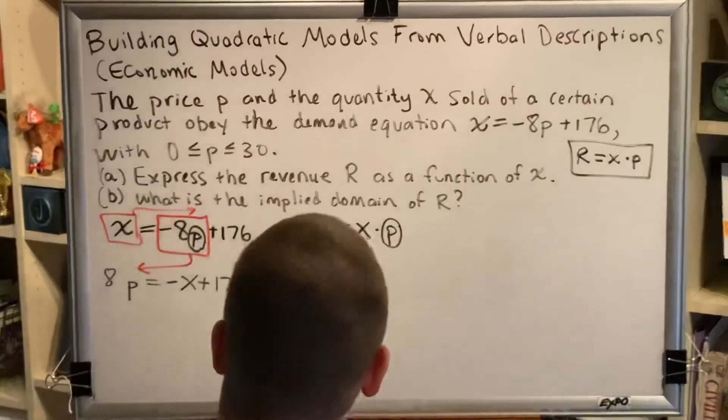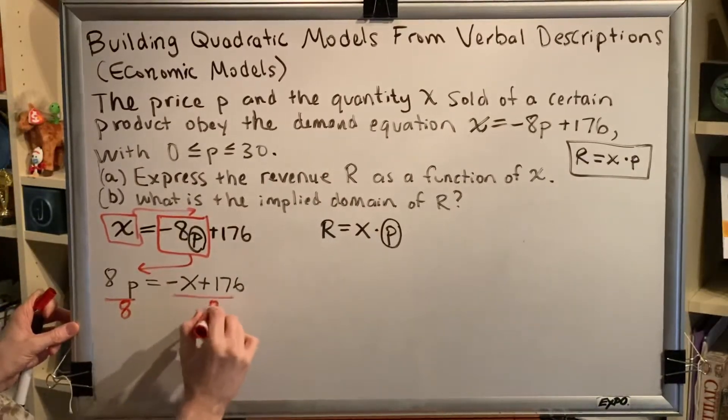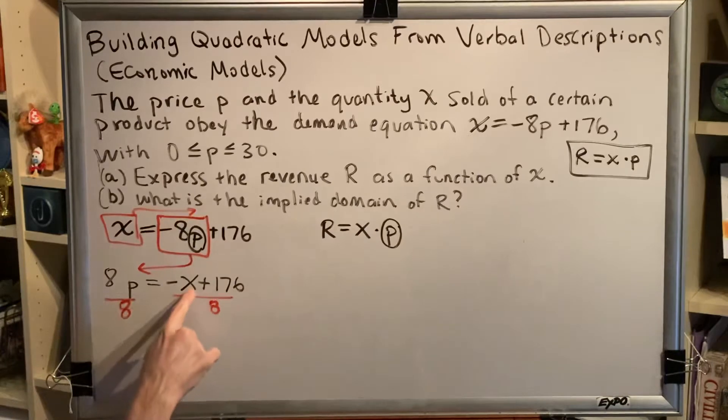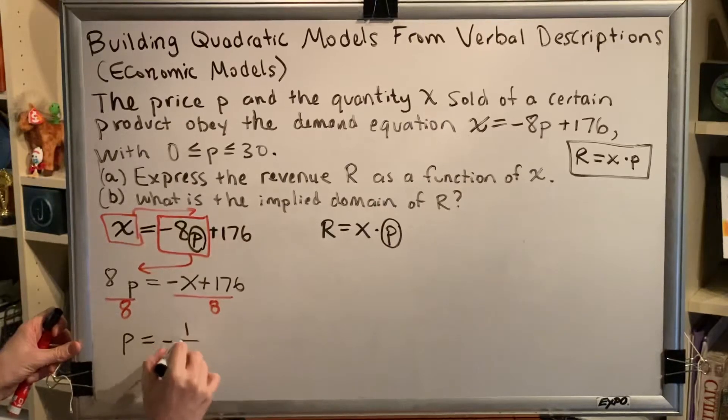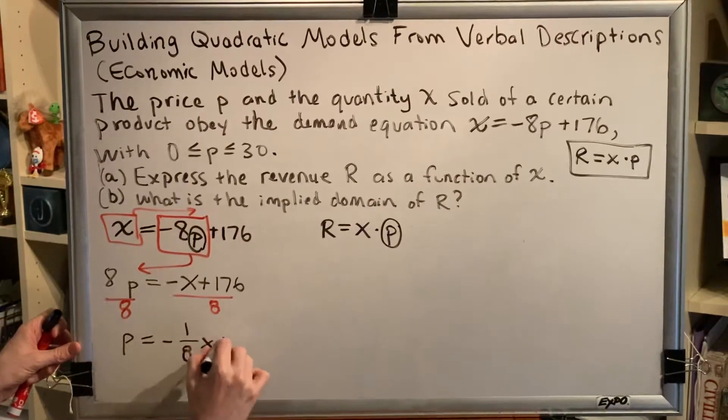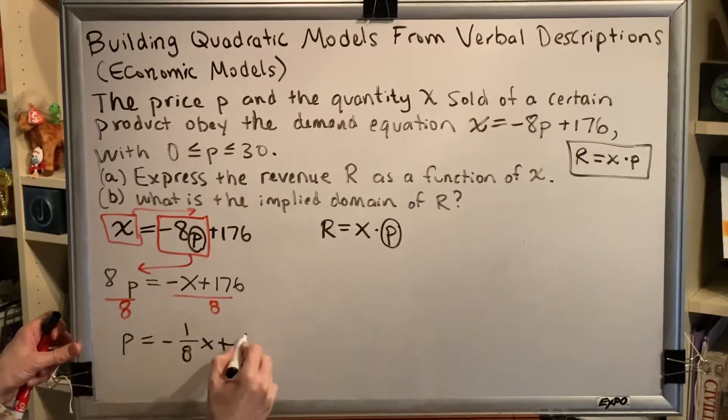Dividing both sides by 8, and remembering that the coefficient of this x is actually negative 1, gives us the following statement: p = -1/8·x + 176/8, which happens to be 22.